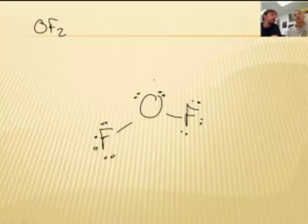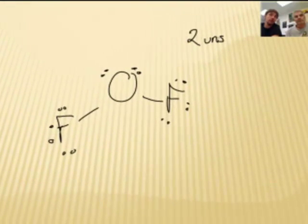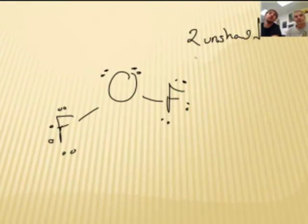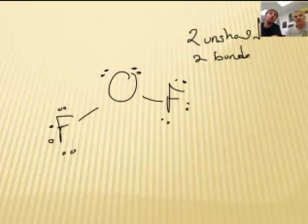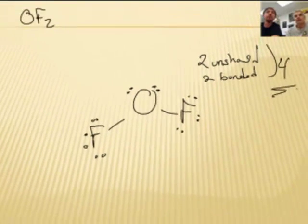Okay, how many electron pairs, Mr. Sampson? On the oxygen, I see two unshared pairs and two bonded pairs. So we're looking at four clouds or four things. Yes, four clouds.